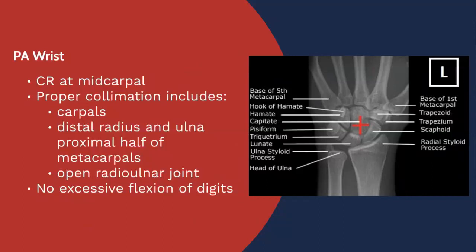You want to see an open radio-ulnar joint — that's one way of evaluating whether the wrist is appropriately positioned in terms of rotation, meaning there's no rotation or minimal rotation. One of the things we do with the wrist is flex the digits, which presses the wrist closer to the image receptor and allows for more open spacing between all of the carpal bones.